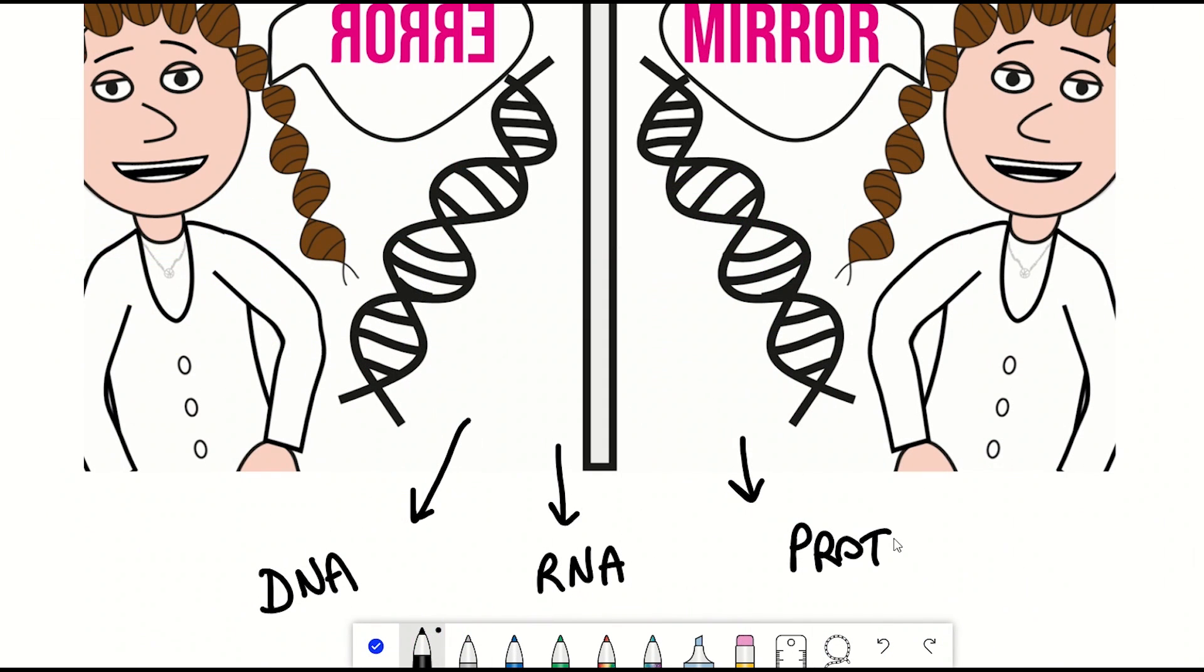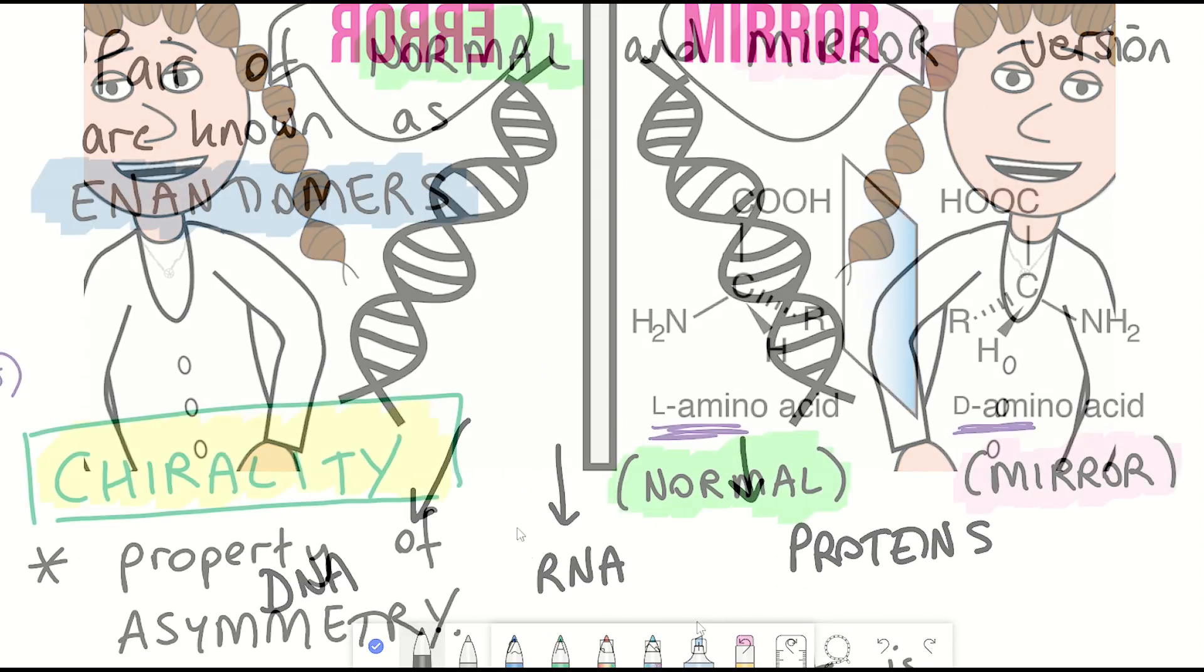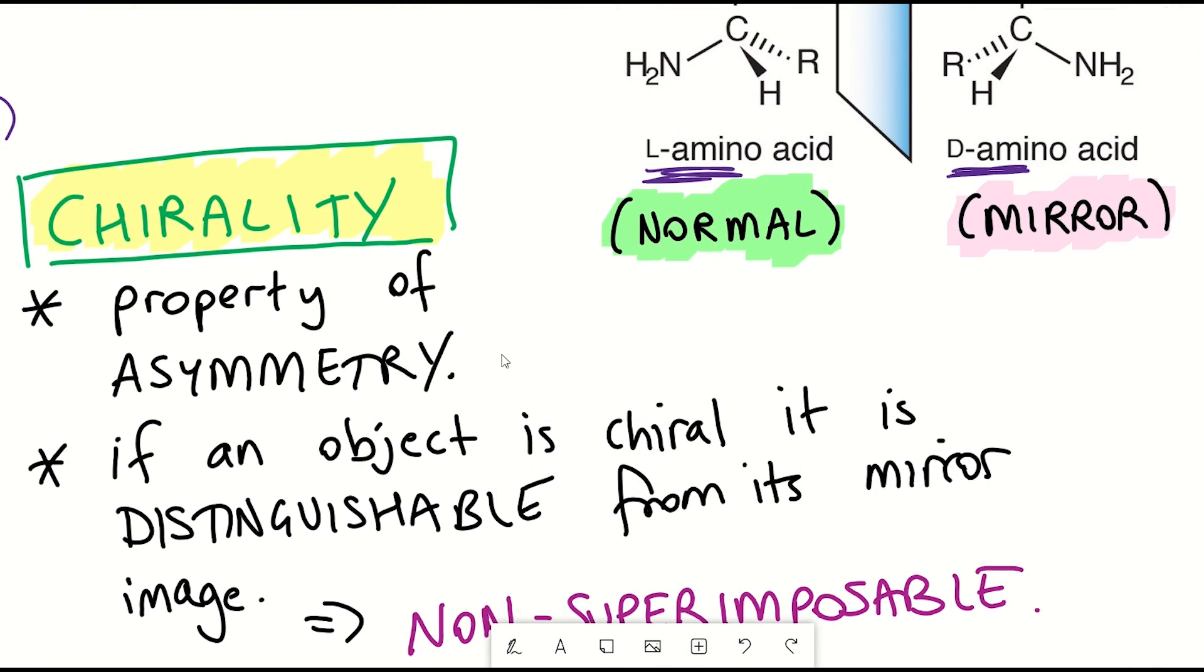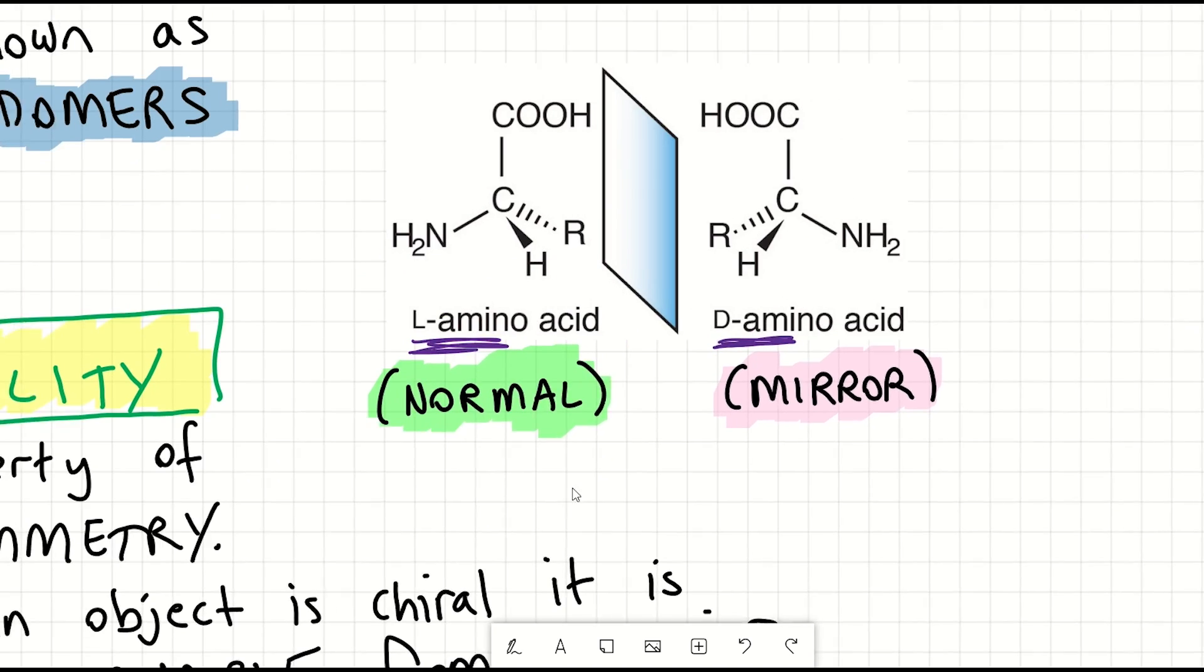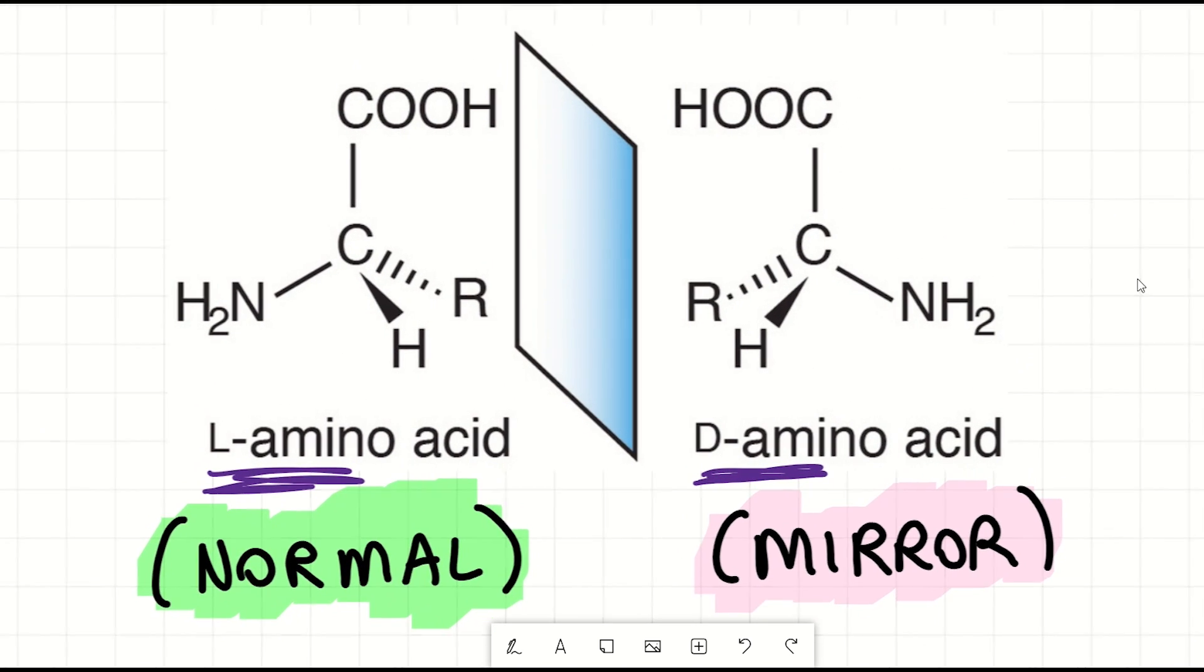And so chirality is a feature of DNA and proteins, well, and RNA as well. And so in the case of proteins, this figure shows it nicely, whereby you've got an amino acid, which is a building block of proteins. And you can see here both of its enantiomers and how they're mirror images of each other. You can't actually superimpose them onto each other.